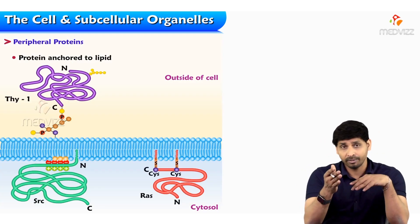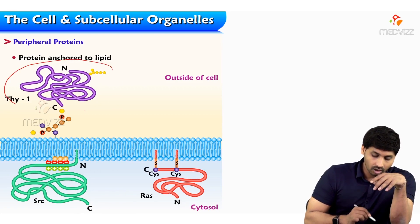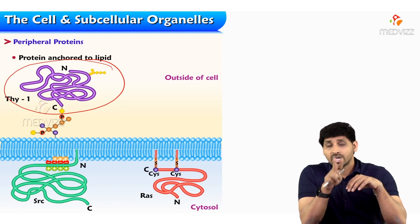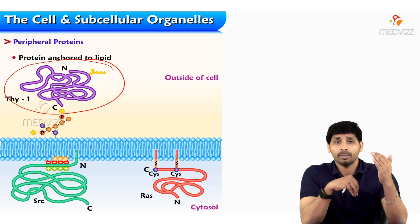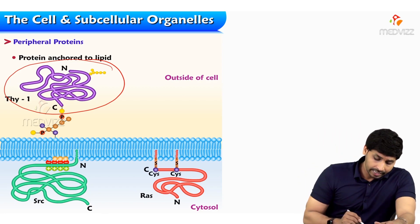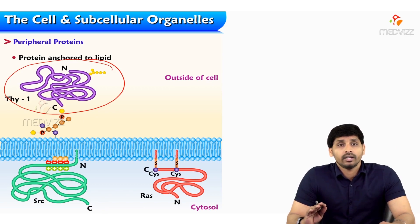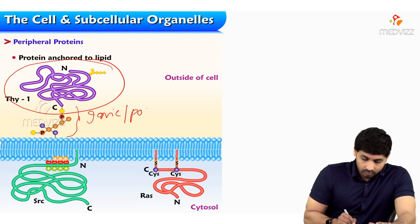Peripheral proteins — to see the diagram here — are present on the outer surface of the membrane. There are two surfaces: one is outer surface and the other one is inner surface. For the biological membrane, peripheral proteins are present on the outer surface of the membrane. They are in linkage to the lipid with ionic and polar bonds, as shown here.